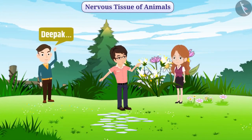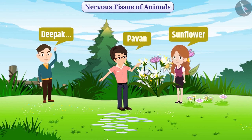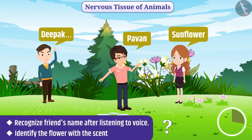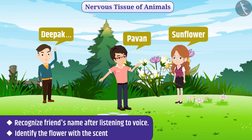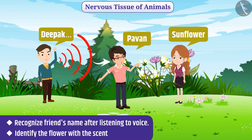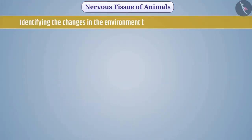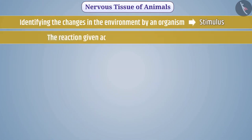We recognize the name of our friend only by hearing his voice. Similarly, only by the fragrance, we can identify the flower. We identify the changes occurring around us and on the basis of these changes, we give reactions. Identifying the changes in the environment by an organism is called stimulus, and the reaction given according to the change is called response.